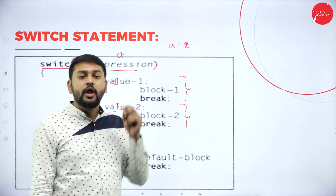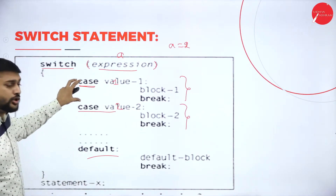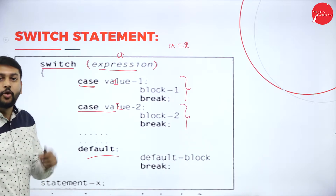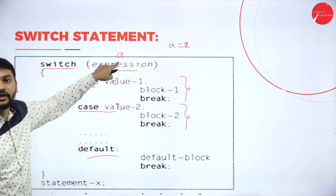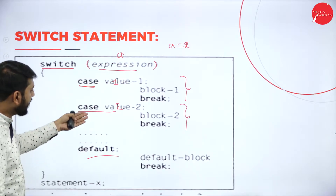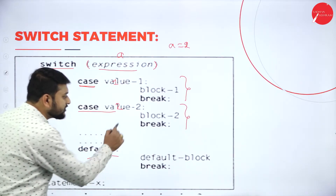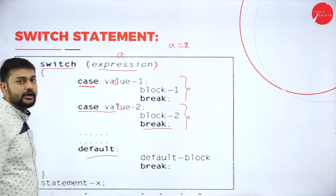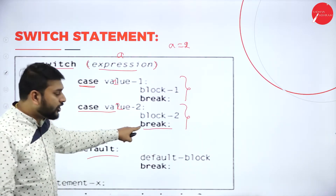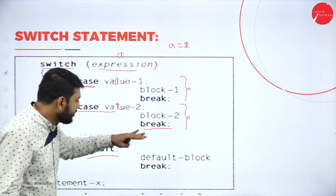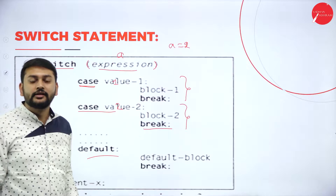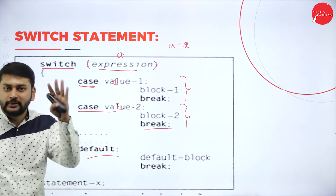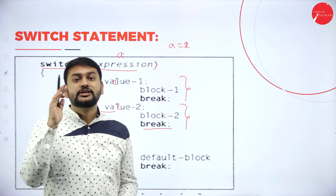How exactly is it executing only one block? What happens is, it is switching to the particular case with the value that you are passing. So I have passed 2 — directly it is switching to that case and it will start executing all the statements inside case 2. Then after that, I have the break statement. If I encounter this break statement, I will come out of this block completely. That's what you need to remember with respect to the switch statement.